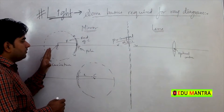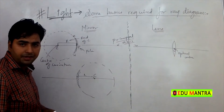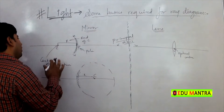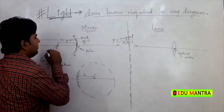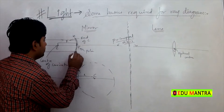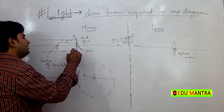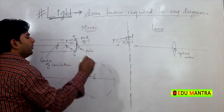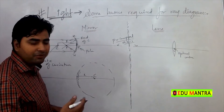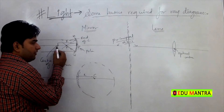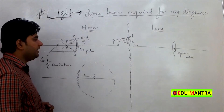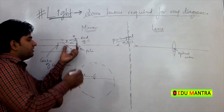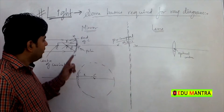Iske baad, jo hum concave mirror lete hain — parallel rays, amhi yahan converging or diverging action dekhate hain. So yeh parallel rays, agar ham lay principle axis se, to kaha se pass hota hai — to ek point se pass hota hai. And what is that point called? That point is called principal focus. Principal focus asal mein jo point hota hai, jo center of curvature aur pole ke exactly midway lie karta hai. Yani ki, agar ham is length ko measure kare — principal focus aur pole ke beech ki length ko measure kare — that is called focal length, represented by small F. Focal length hai wo.